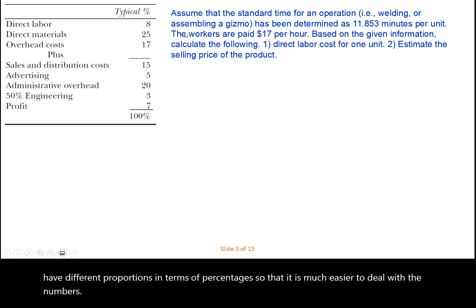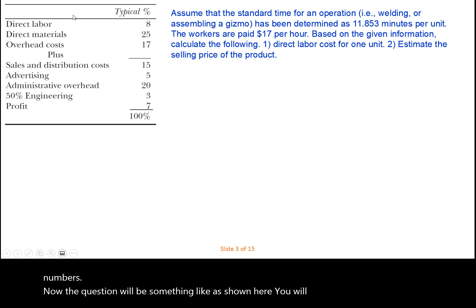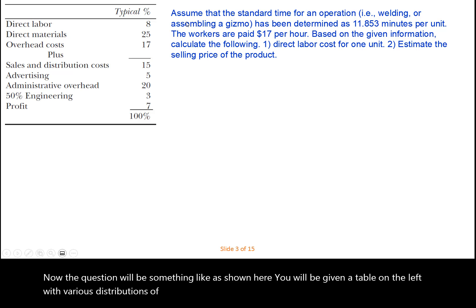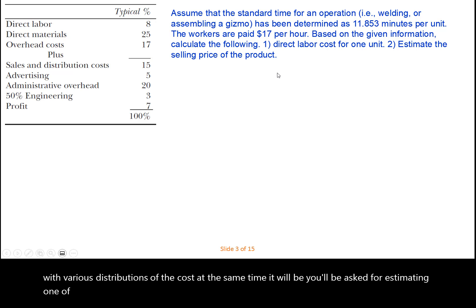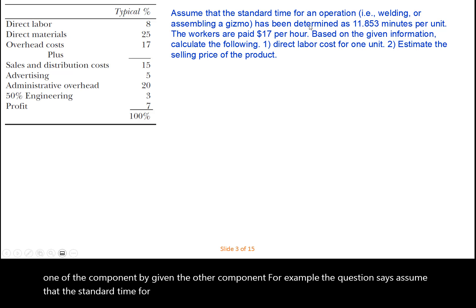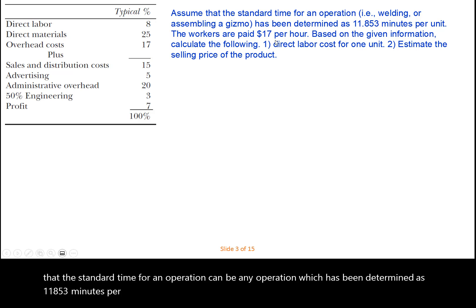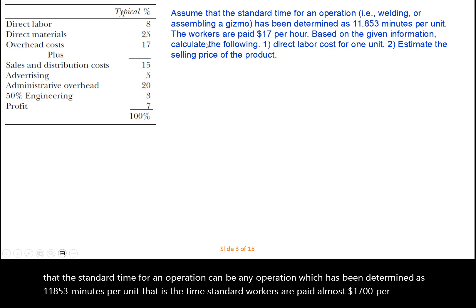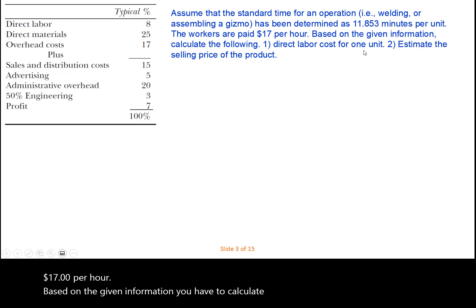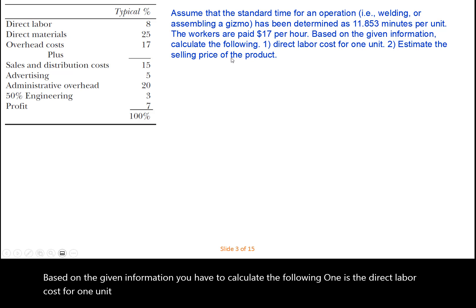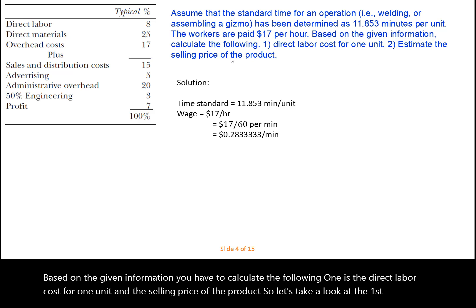The question will be structured as shown here. You will be given a table on the left with various distributions of cost, and you'll be asked to estimate one component given another. For example, assume that the standard time for an operation has been determined as 11.853 minutes per unit. Workers are paid $17 per hour. Based on this, calculate the direct labor cost for one unit and the selling price of the product.